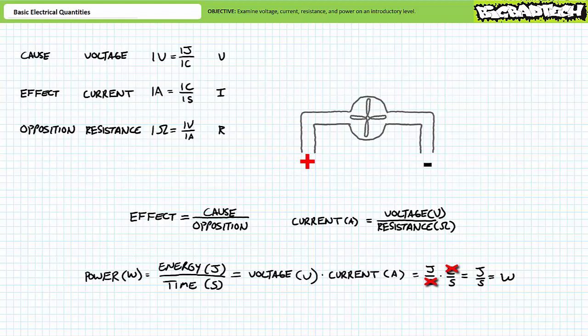High pressure times no flow yields no power. Consider another case where the water is flowing, but exerting no force on the paddles of the water wheel. In this case, the water wheel still won't turn because the pressure or voltage is absent. High flow times no pressure yields no power.